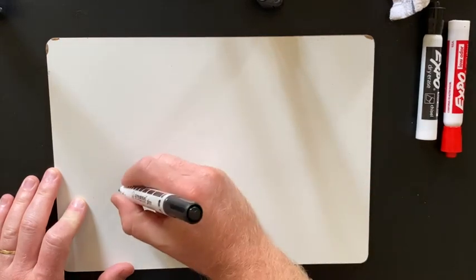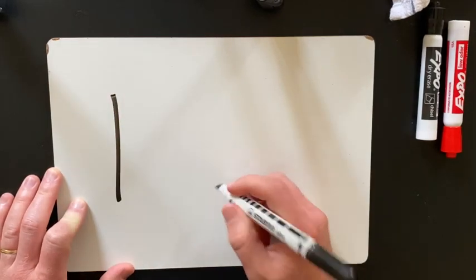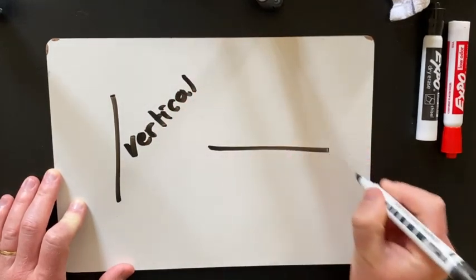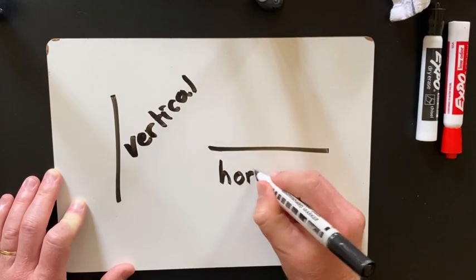So first thing you need to know is if a line goes that way it's called vertical, and if a line goes sideways then it's called horizontal.